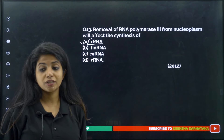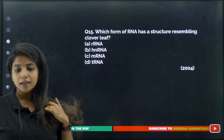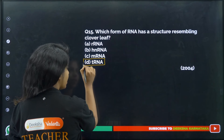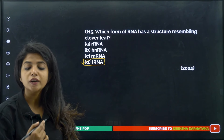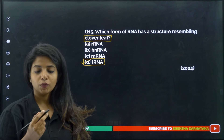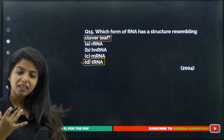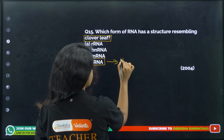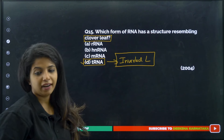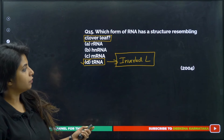Which form of RNA has a structure resembling a clover leaf? The 2D structure of tRNA looks like a clover leaf. However, the actual 3D structure of tRNA looks like an inverted L. This distinction is important and has appeared in exam questions. The answer to the clover leaf question is tRNA.